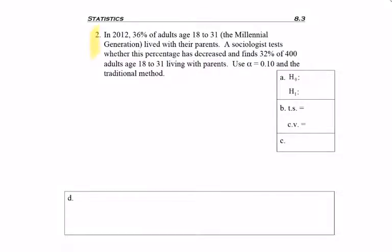Problem 2. In 2012, 36% of adults aged 18 to 31, the millennial generation, lived with their parents. A sociologist tests whether this percentage has decreased and finds 32% of 400 adults aged 18 to 31 living with their parents. Use alpha equals 0.10 and the traditional method.